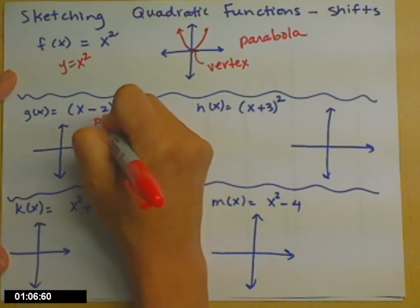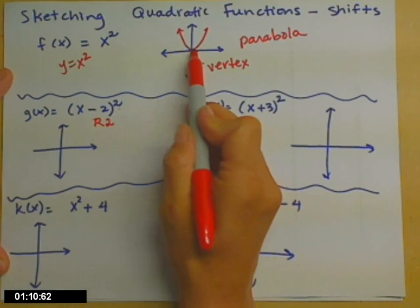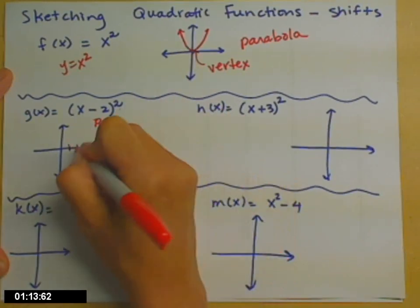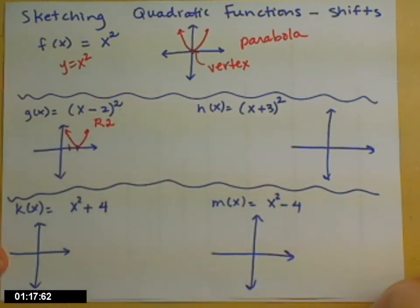The minus moves my parabola right to 2. So I take it where it used to be, and I just move it right 2 spaces, and I draw the exact same picture.